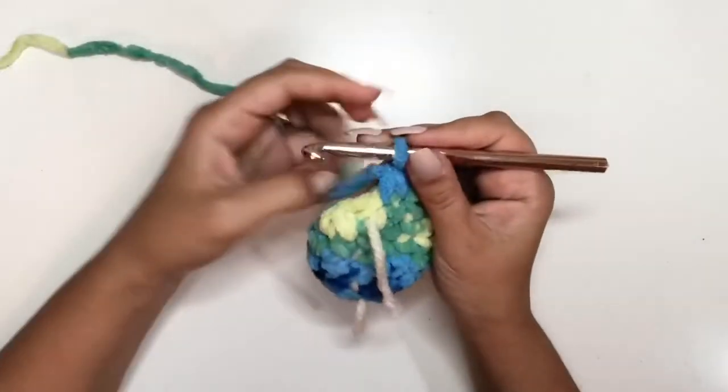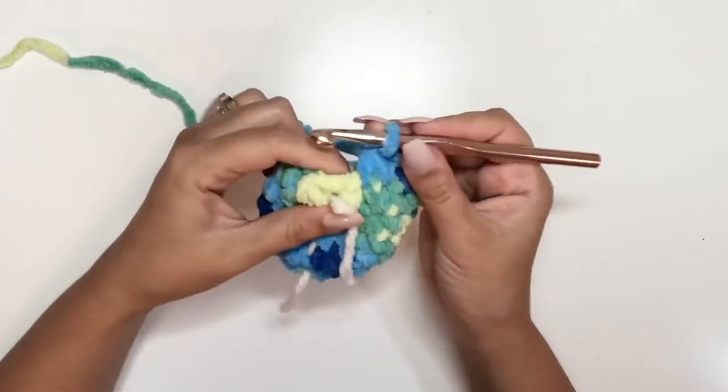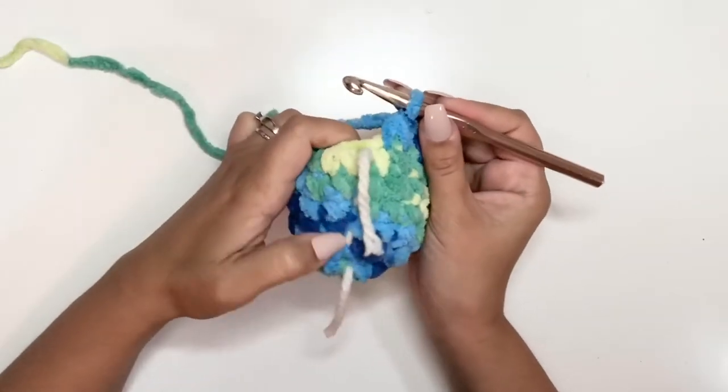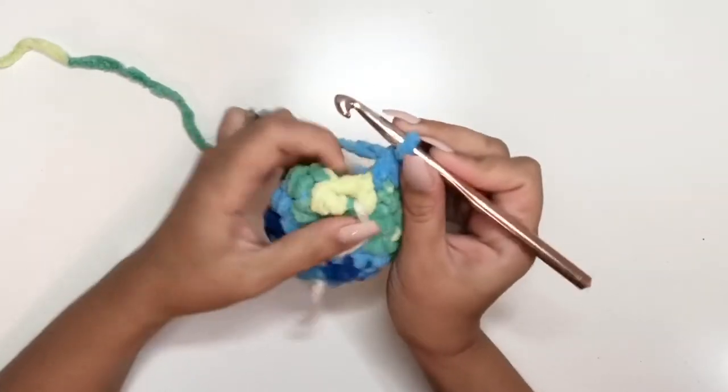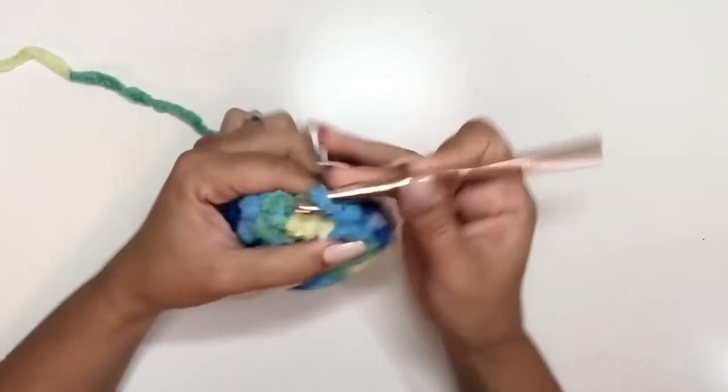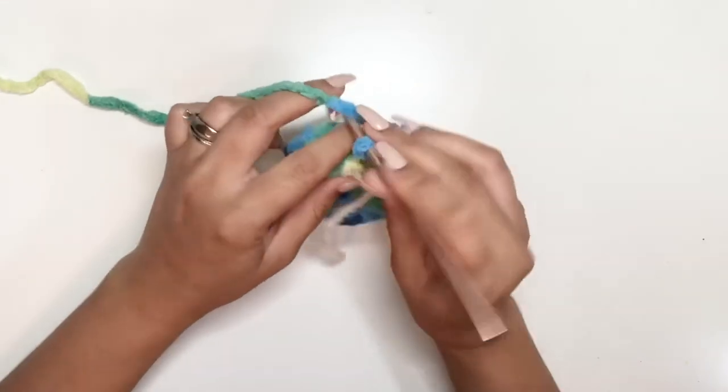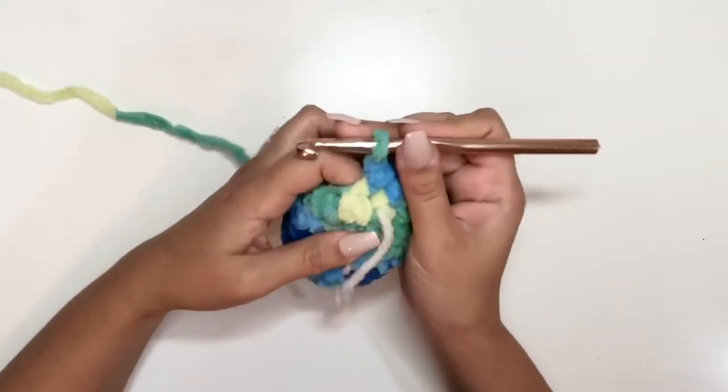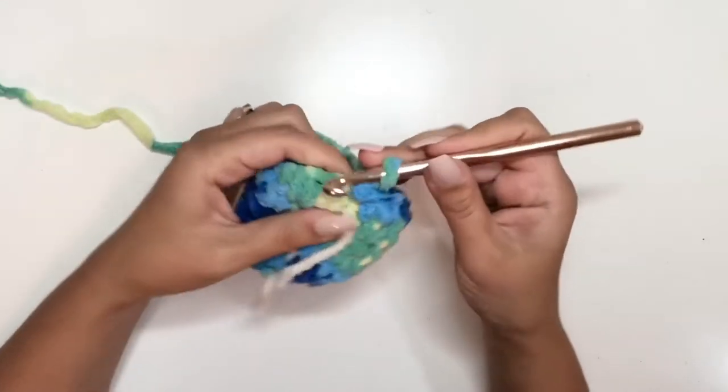Now for this next row we're going to join with a slip stitch. We haven't done that in previous rows just to avoid a seam, but for this row we are going to join. So join here with a slip stitch, and we're going to chain one. We're going to do three single crochet decreases.